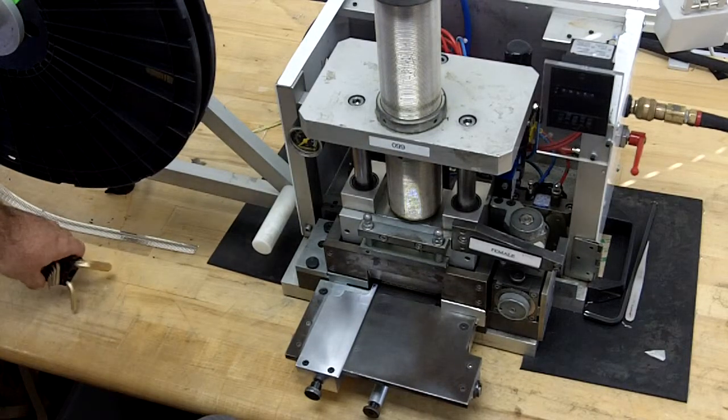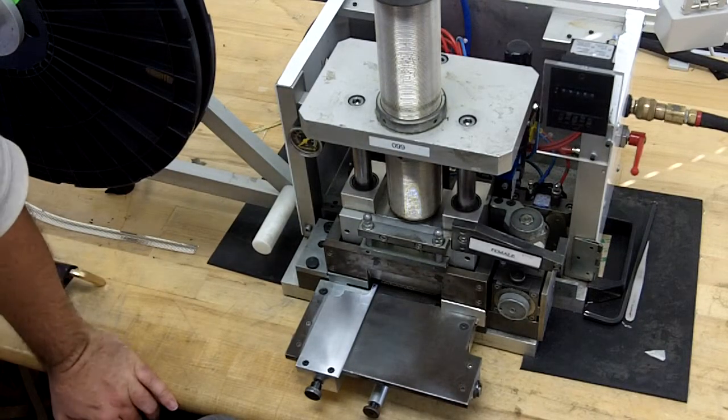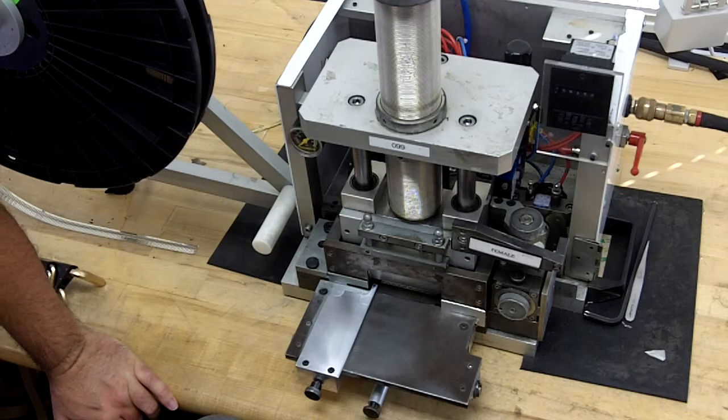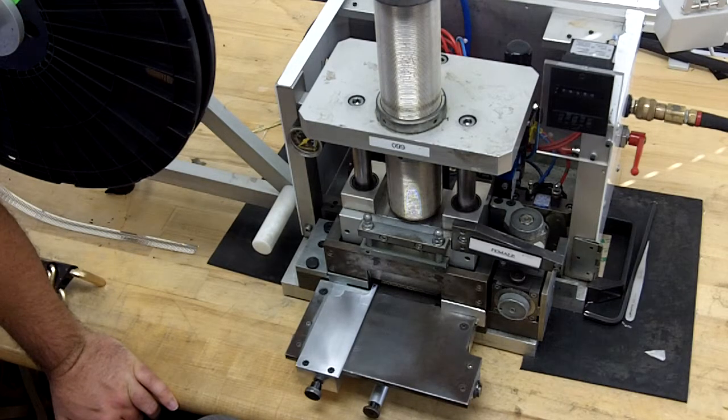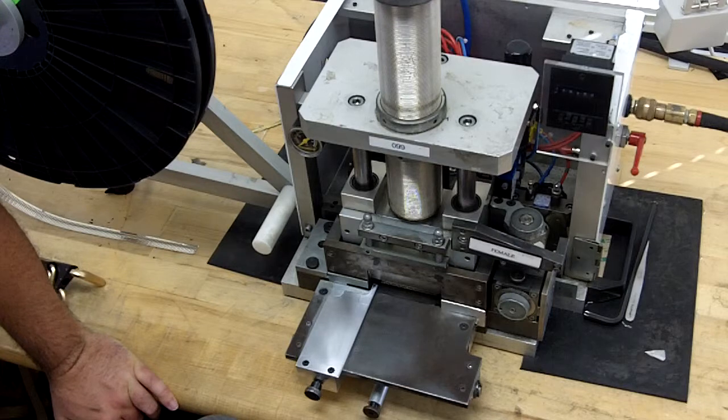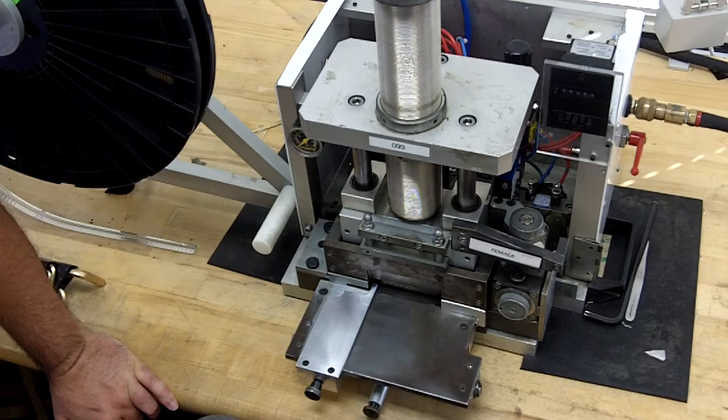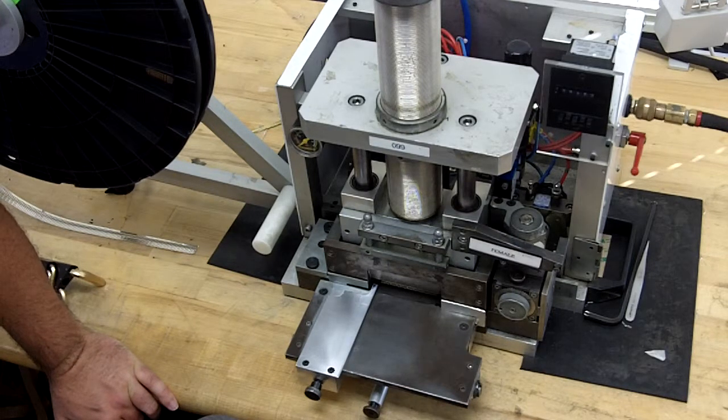This video applies to changing the dies, male to female, for the 101.25 SA Pneumatic Crimflex Press. This does not apply to the 10.500 SA or SAP version.